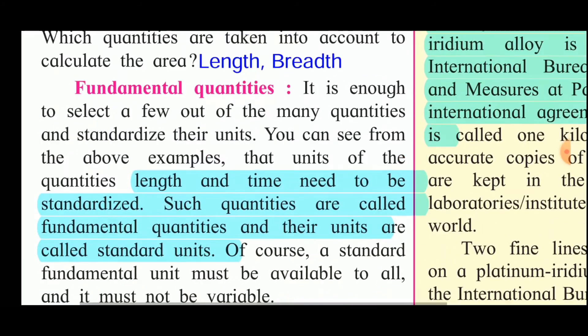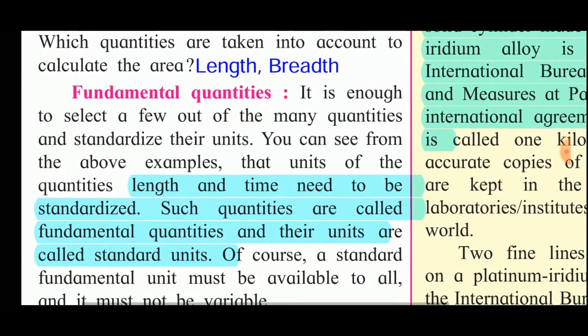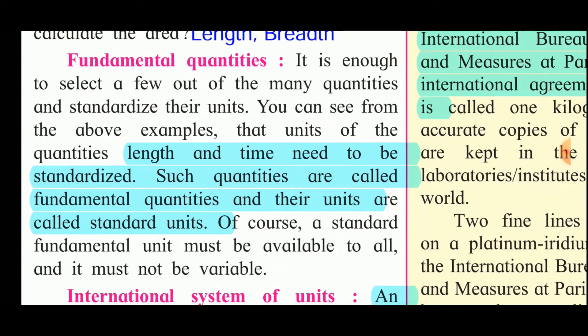The fundamental quantities. It is enough to select a few out of the many quantities and standardize their units. You can see from the above examples that units of the quantities, length and time need to be standardized. Such quantities are called fundamental quantities and their units are called standard units. Of course, standard fundamental unit must be available to all and it must not be variable.